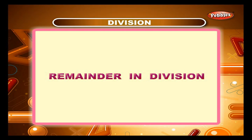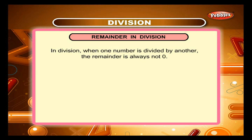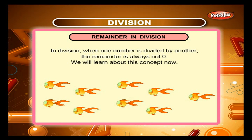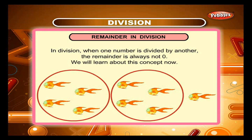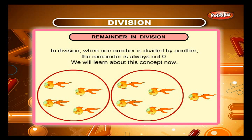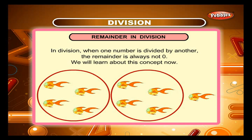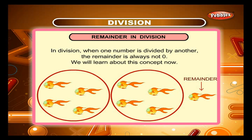Remainder in division. In division, when one number is divided by another, the remainder is not always 0. We will learn about this concept now. If there are 9 fish and we make groups of 2, one fish will be left. This shows that 2 does not divide 9 an exact number of times. When the divisor does not divide the dividend an exact number of times, the number left over after dividing is called the remainder.